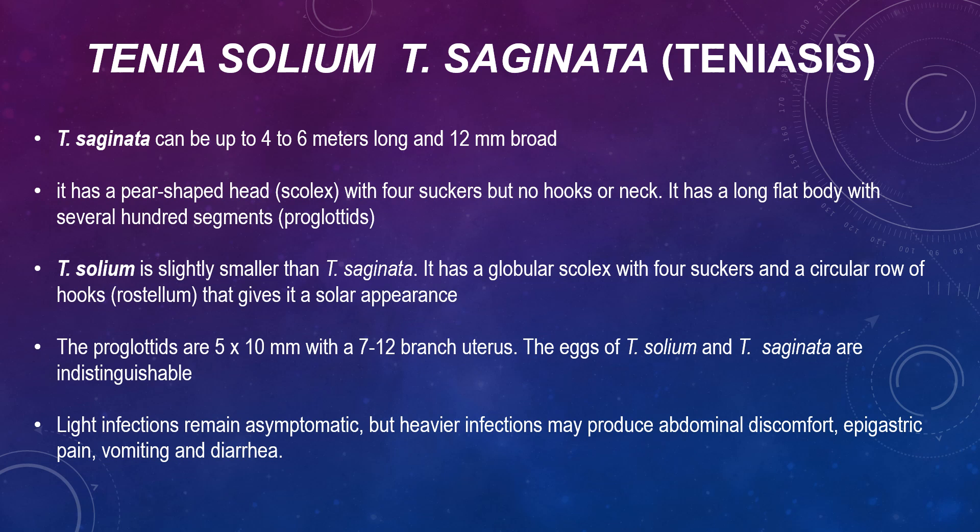For Taenia solium, it is slightly smaller than T. saginata. It has a globular scolex with 4 suckers and a circular row of hooks that gives it a solid appearance. It has a neck and a long flat body. The proglottids are 5 x 10 millimetres or 7 x 12 millimetres with a branched uterus. The egg of T. solium and T. saginata is indistinguishable morphologically.